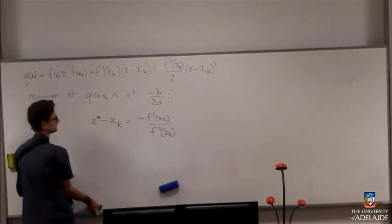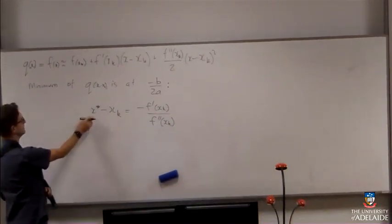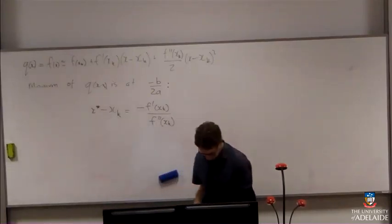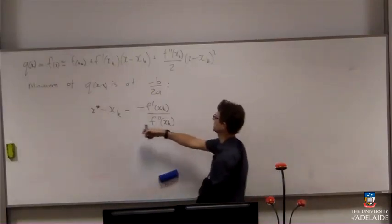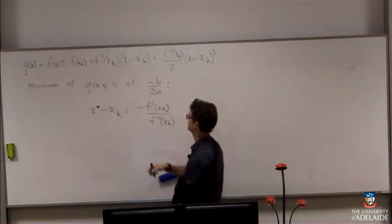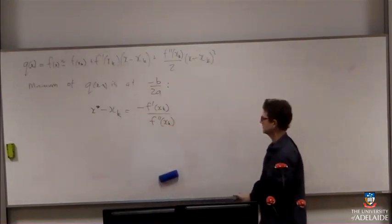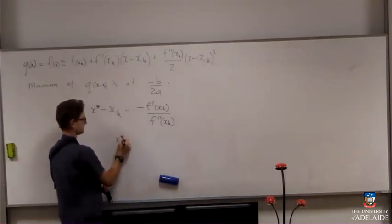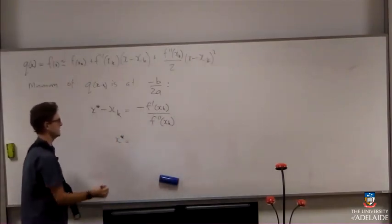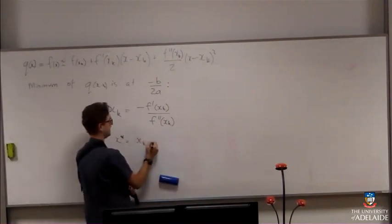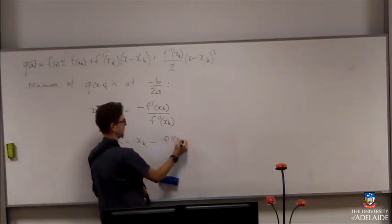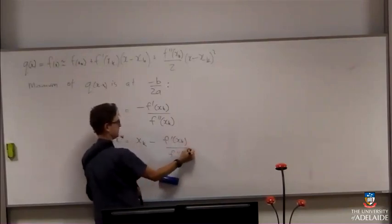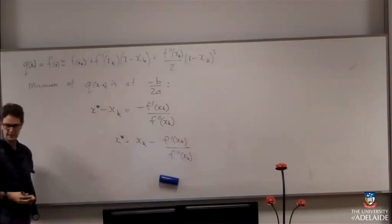All right? So, my guess at the minimum minimizer, so x star is going to minimize, x star is the thing that minimizes this f up here. All right? So, if I just rearrange this, then x star is going to be equal to xk, take away f prime of xk over f double prime of xk.